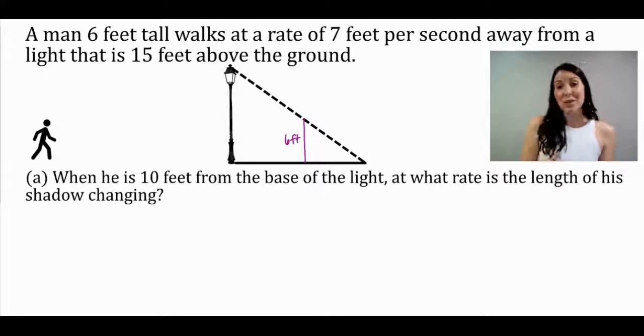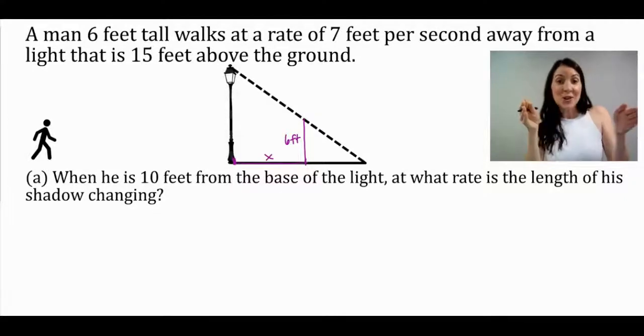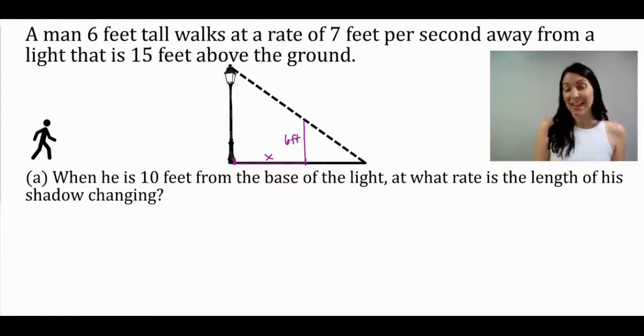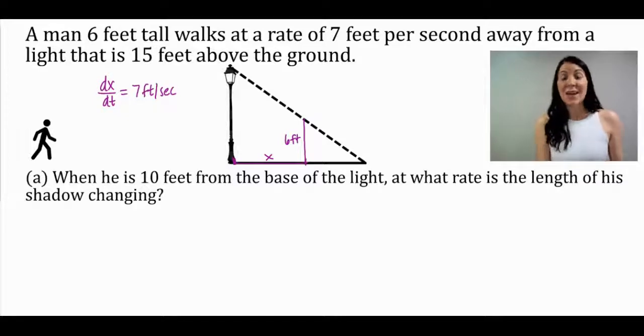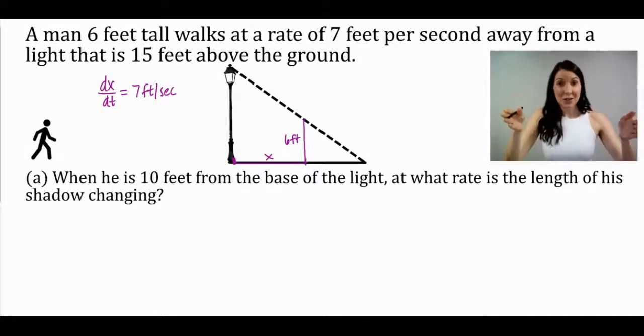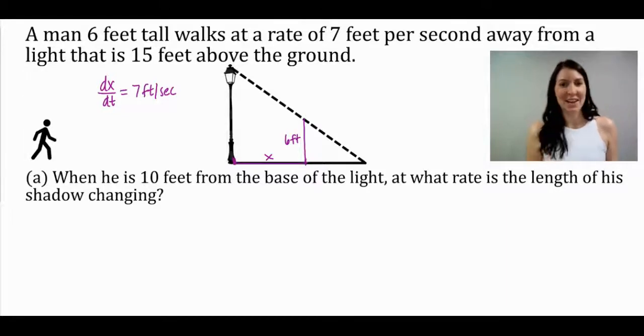The man walks seven feet per second away from a light. So that means the distance between the light and where he is, this distance right here I'm going to call x, is increasing at a rate of seven feet per second. Our notation for that would be dx/dt is equal to seven feet per second. Now why is it positive? It's because that distance is increasing. If he was walking towards the light post then that number would be negative.